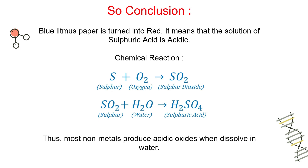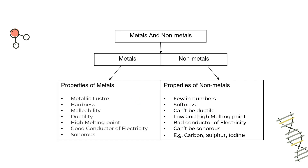In case of metals, blue litmus paper turns blue; in case of non-metals, blue litmus paper turns red. This is the basics — understand and memorize this. Now to conclude today's lecture, let's complete the comparison table of metals and non-metals. The properties of non-metals are: they are few in number, they are soft, they are not ductile, they have low as well as high melting points, they are bad conductors of electricity (except graphite), they cannot be sonorous. Examples of non-metals are carbon, sulphur and iodine.